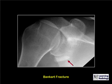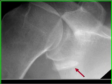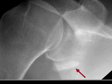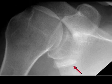This is what a Bankart fracture looks like — a fracture of the anterior rim of the glenoid as the humeral head strikes it on dislocating. This shoulder has been reduced; there is no dislocation demonstrated.